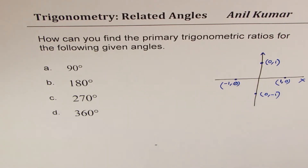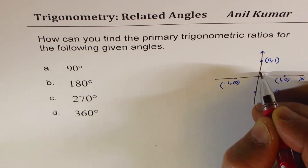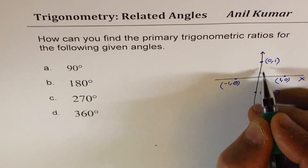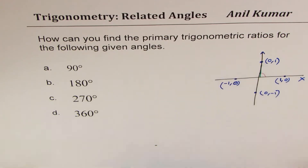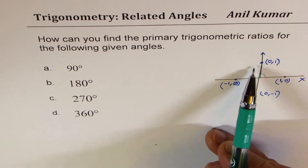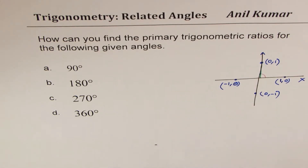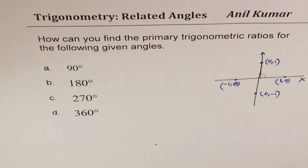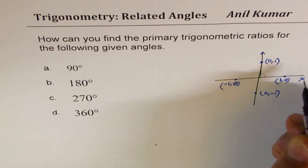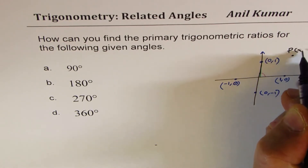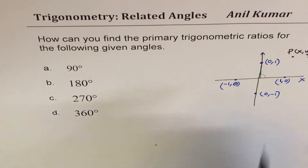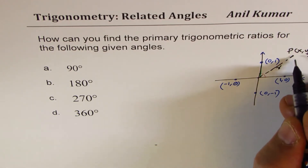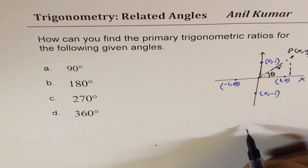When we talk about 90 degrees, we're talking about this angle. Therefore we look at the terminal arm which coincides with the point (0, 1). Now, can you give all the trigonometric ratios from the point (0, 1)? Let me give some background. For any general point (x, y) on this plane that is r units away at angle theta...